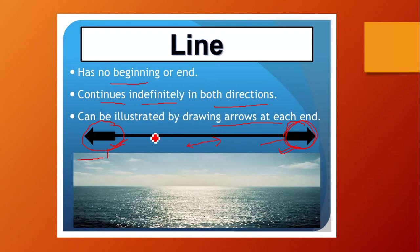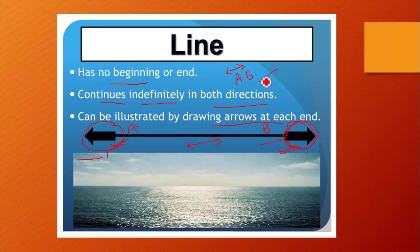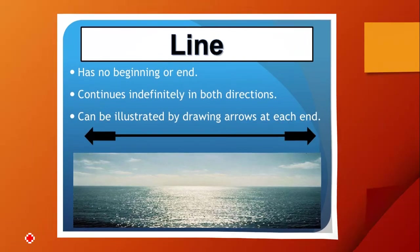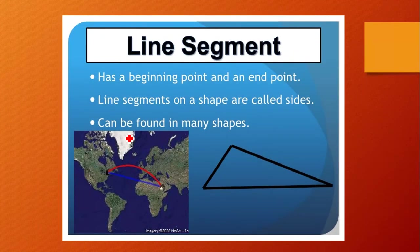Symbolically, if I name this Line AB, we write AB with a double-arrow sign over it — that is the way to write a line symbolically. Next we have a line segment.